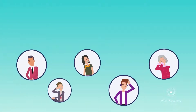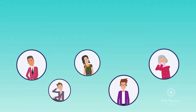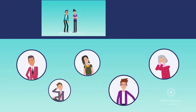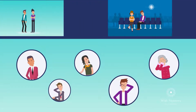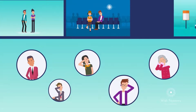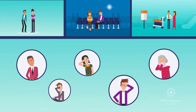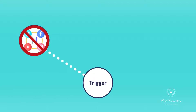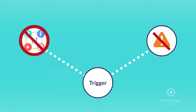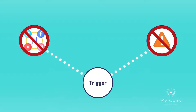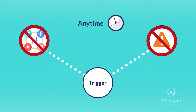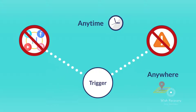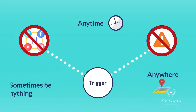We're all triggered at some point — whether when talking to a friend, watching a movie, or even going to certain places. Unlike social media, triggers don't come with warning notifications. They can happen anytime, anywhere, and sometimes be anything.